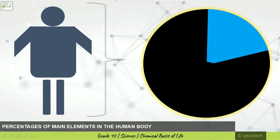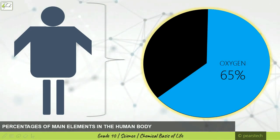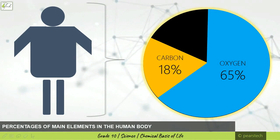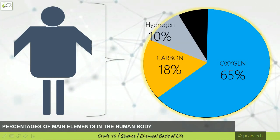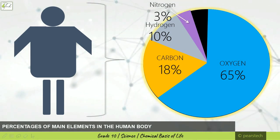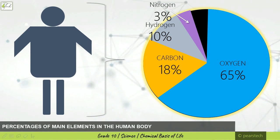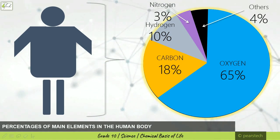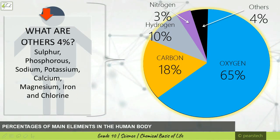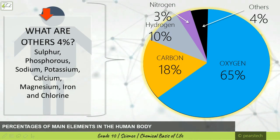Oxygen represents 65 percent, carbon represents 18 percent, hydrogen represents 10 percent, and nitrogen represents 3 percent. The balance is 4 percent — that is others. What are the others? That 4 percent represents sulfur, phosphorus, sodium, potassium, calcium, magnesium, iron, and chlorine.